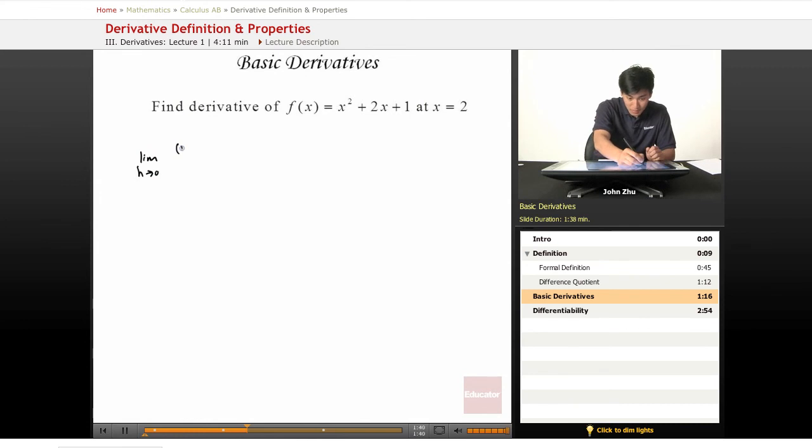x plus h squared plus 2x plus h plus 1 minus x squared plus 2x plus 1, over h.